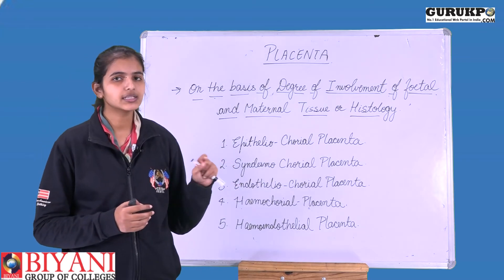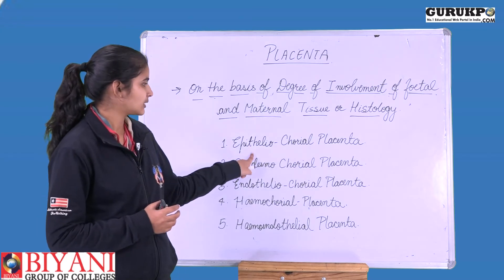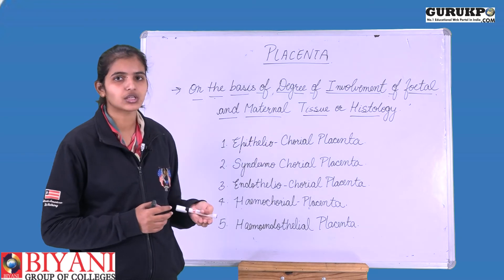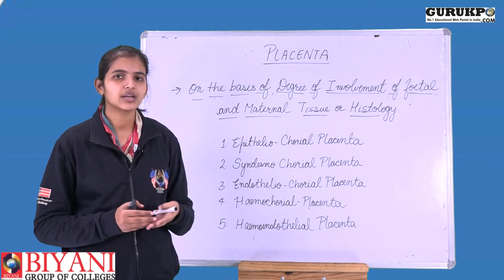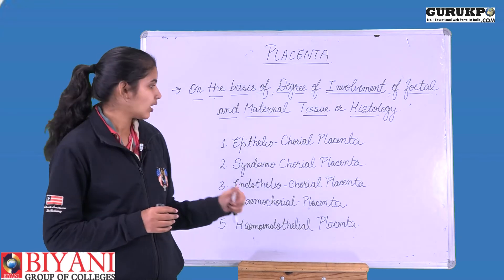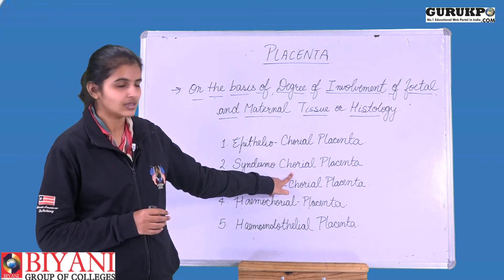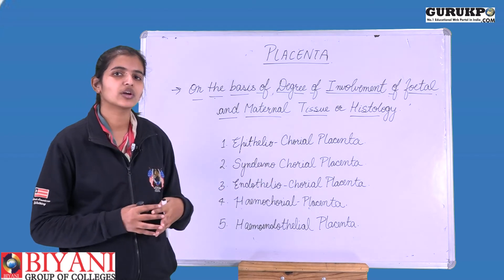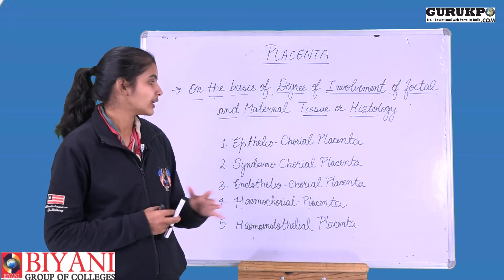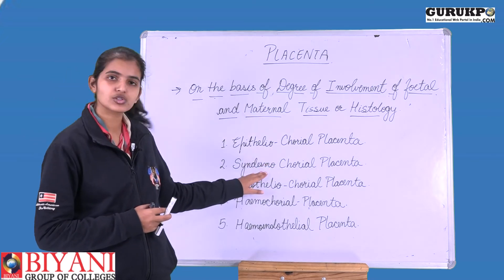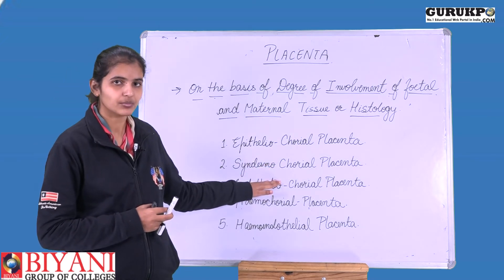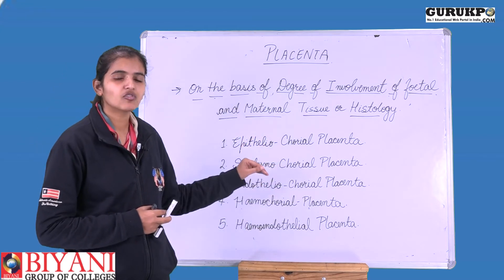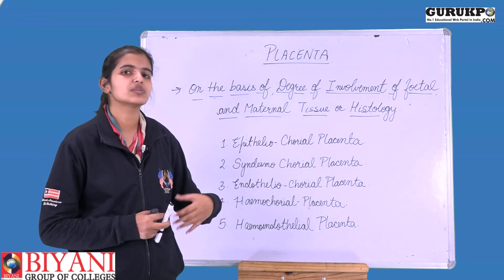In syndesmochorial placenta, the epithelial layer has been corroded and removed. Now the connective tissue is present, and the chorial layer of the fetus is in contact with the mother's connective tissue. Our epithelial layer has been removed and involvement has become more dense. As we go down through the types, the involvement or bonding becomes stronger.